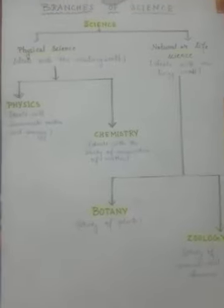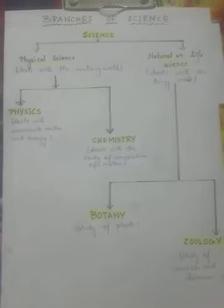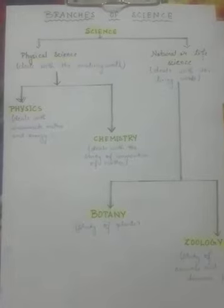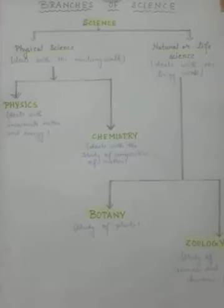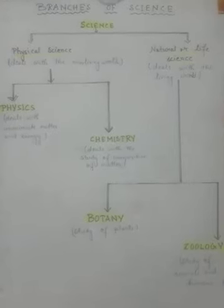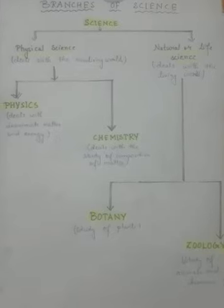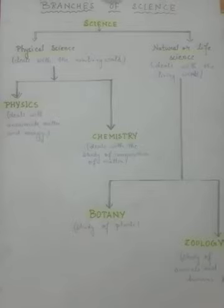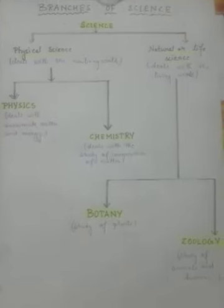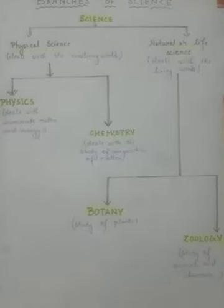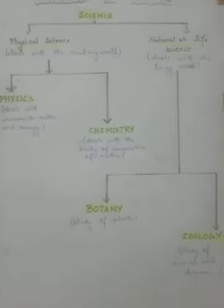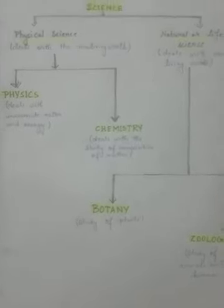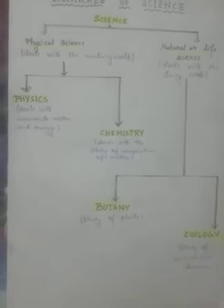Now let us understand the different branches of science. I have drawn a flowchart on the different branches of science in my notes. Science is divided into two main branches: physical science and natural or life science. Physical science deals with the non-living world. Natural or life science, from the name, deals with the living world — anything which is living, like plants and animals.